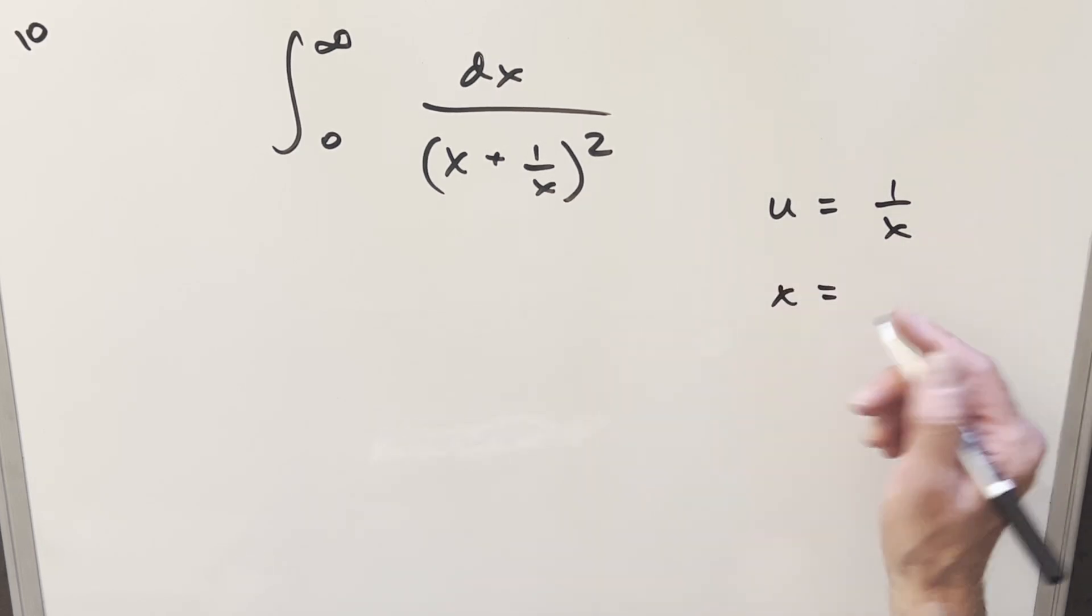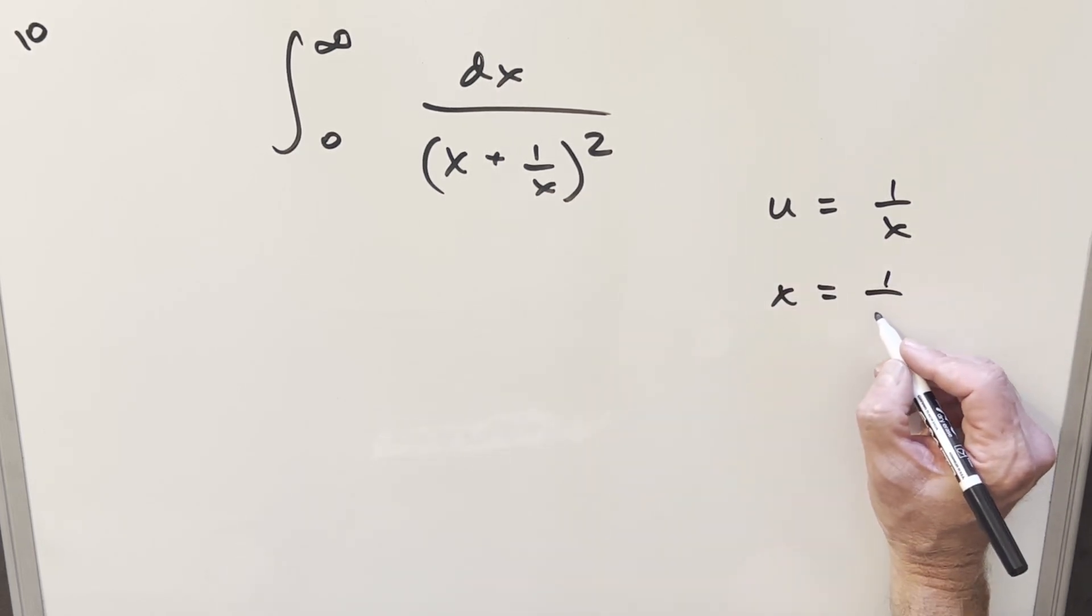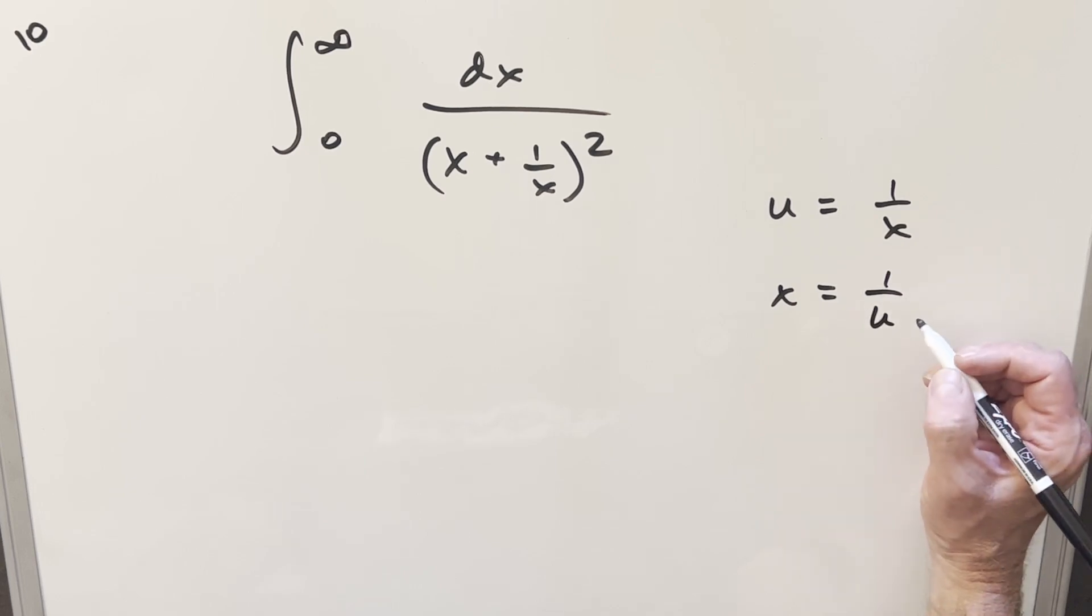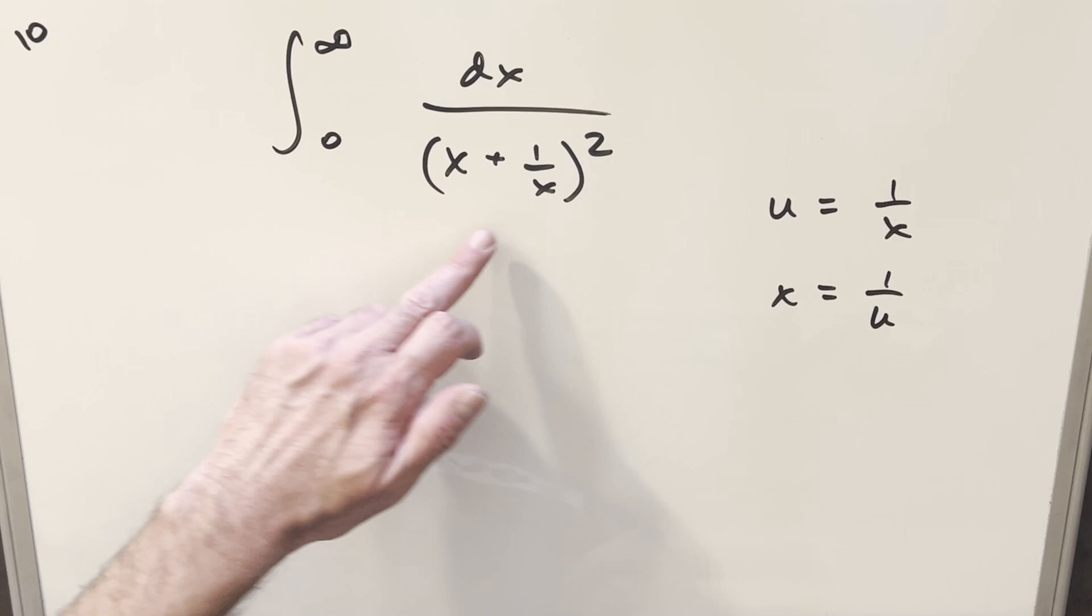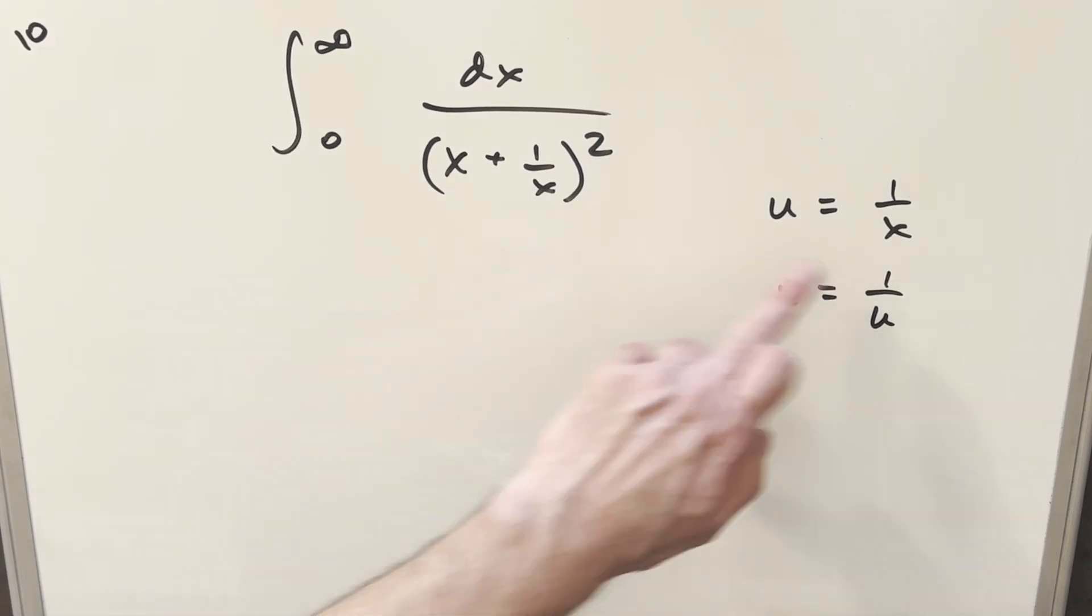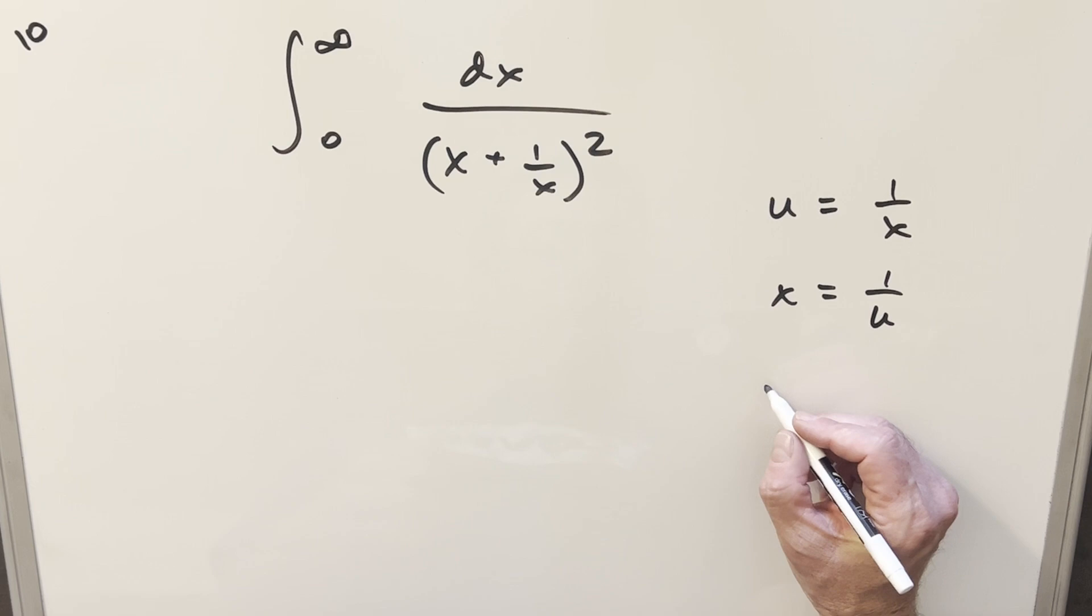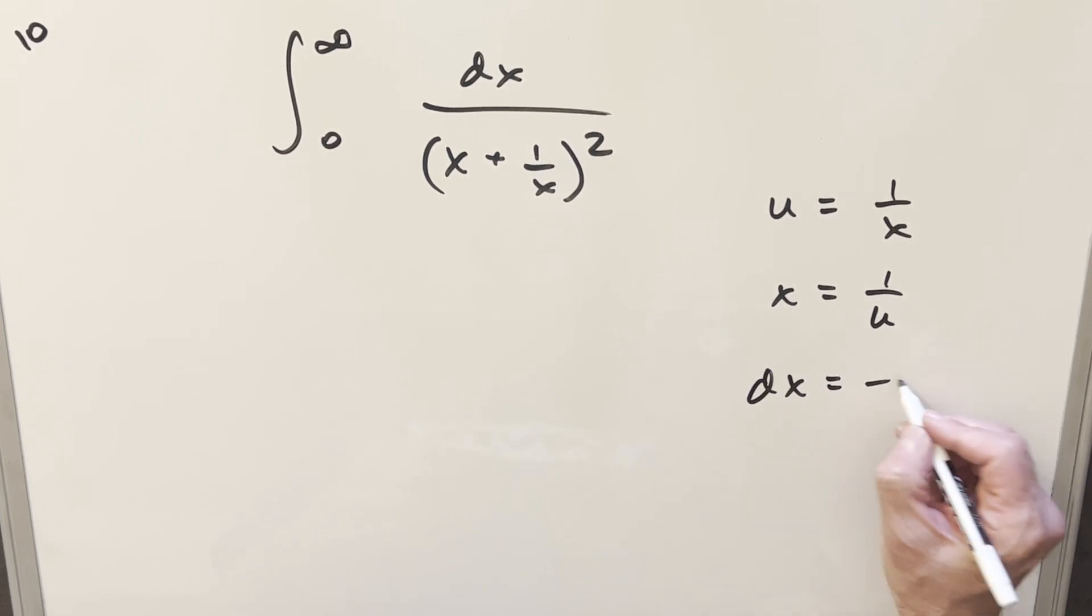I can just rearrange to get a value for x, so x equals 1 over u. The reason this is nice for this problem is because it's going to flip the bounds with 0 and infinity. And then also we already have this 1 over x right here. So there's kind of a lot of nice symmetry to it. Then I'll take my derivative. dx is going to be minus 1 over u squared du.